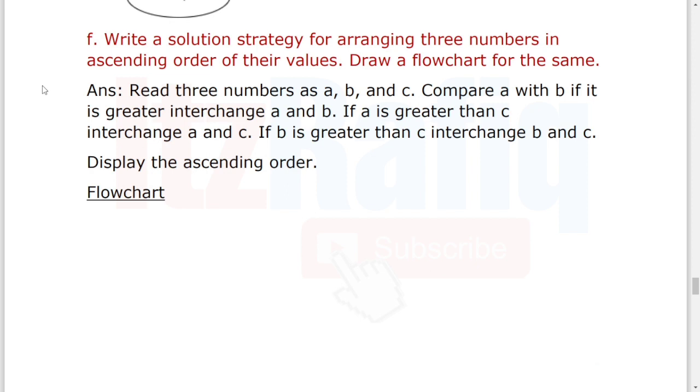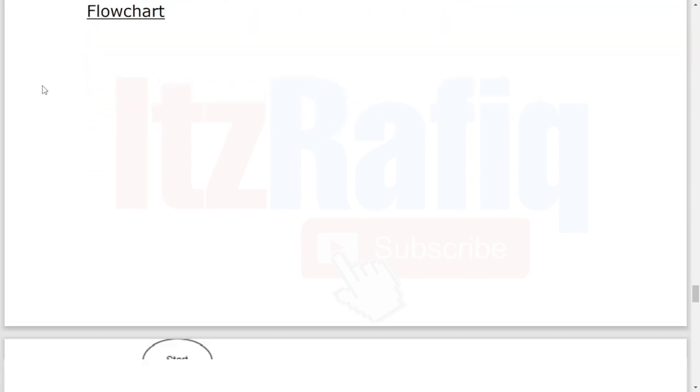Then question number F: Write a solution strategy for arranging three numbers in ascending order. This will be the solution strategy and the flowchart will be this one.